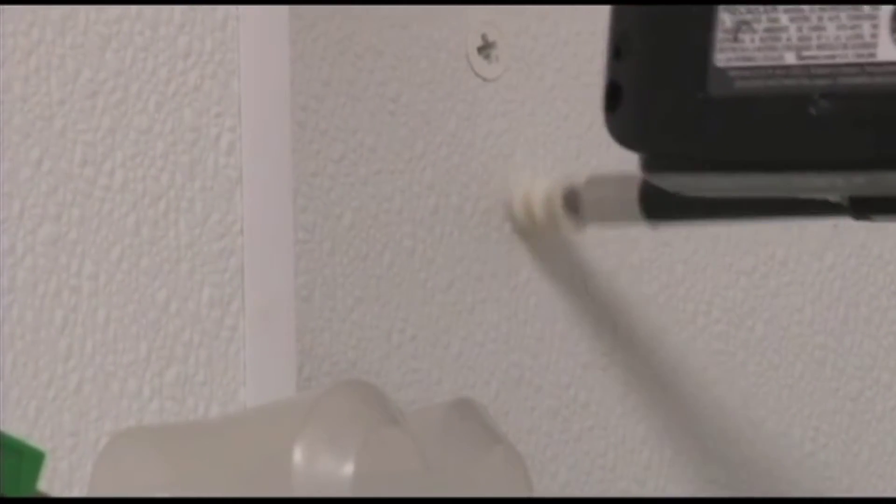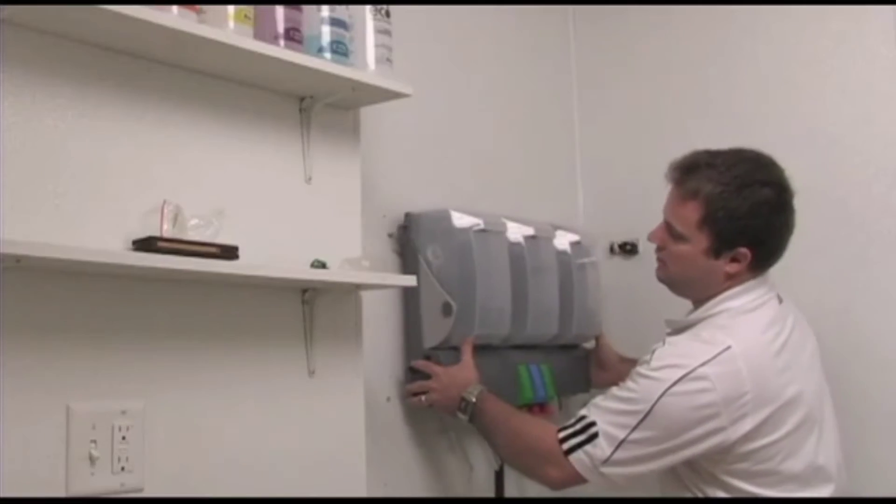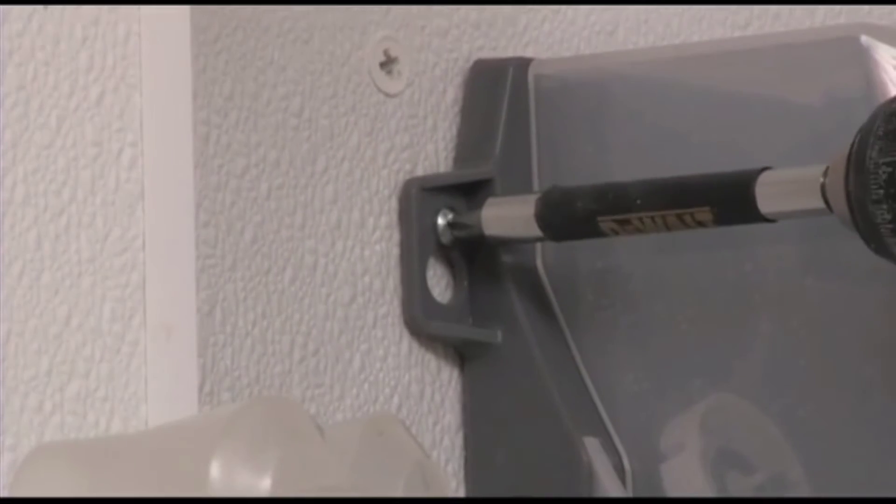Install the wall anchors and screws. Hang the eco-proportioning system on the screws and tighten the screws.